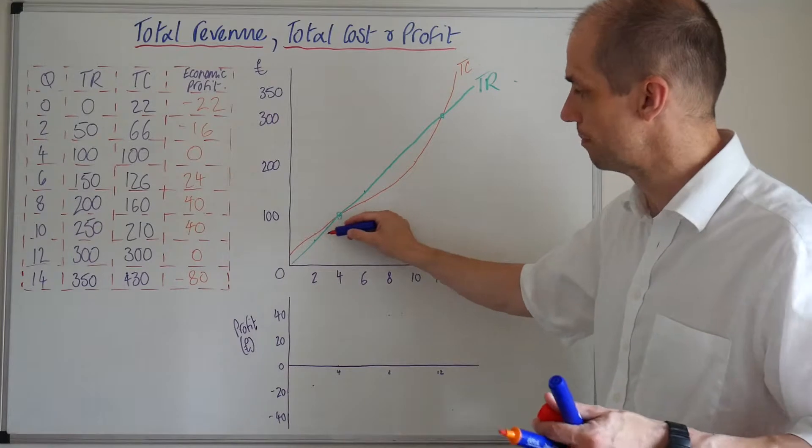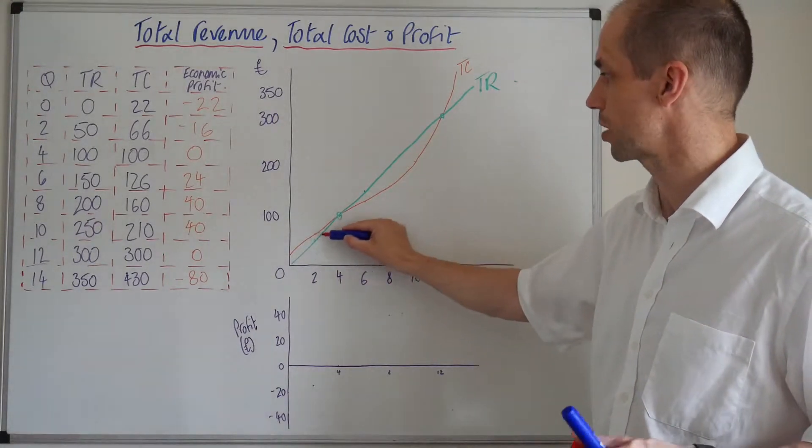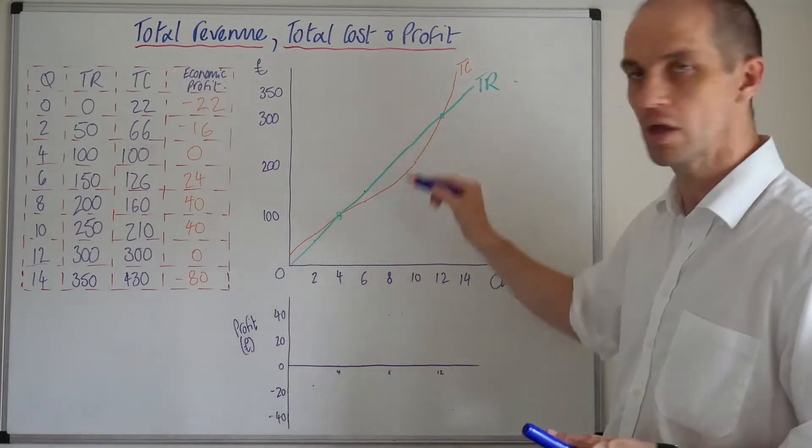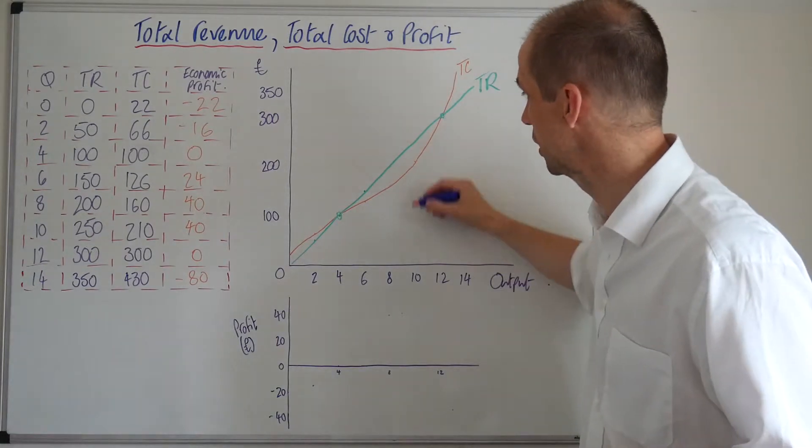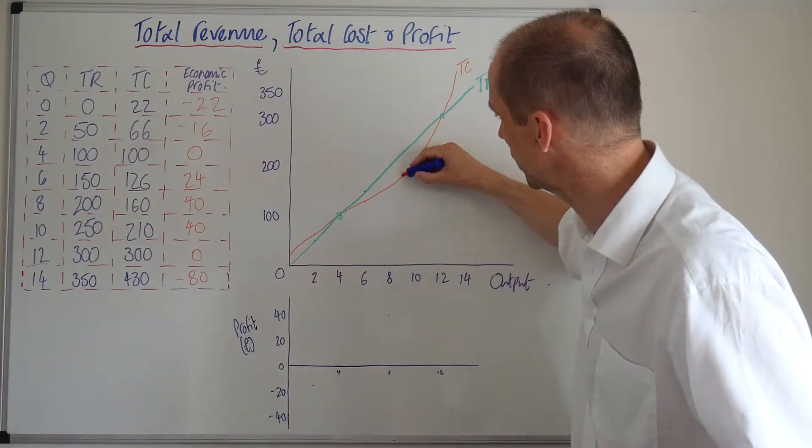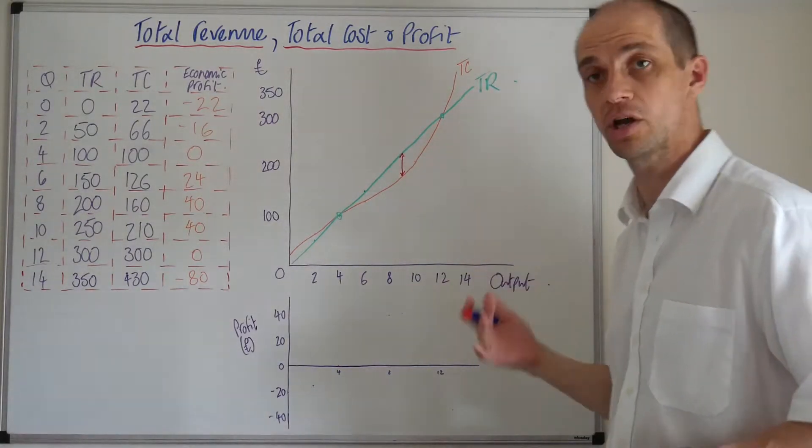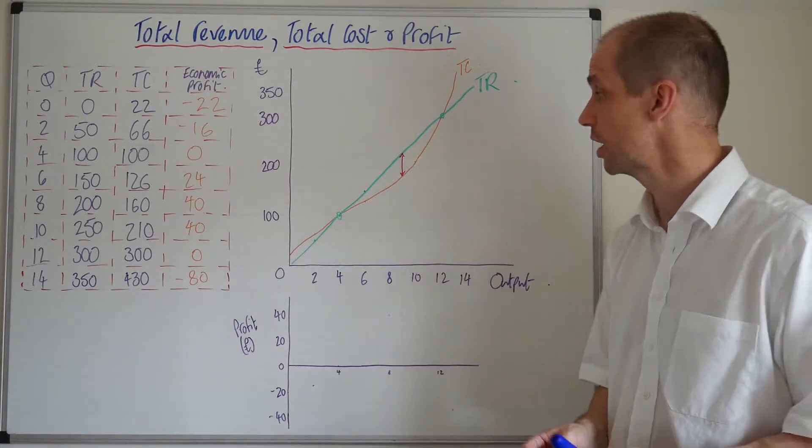But what we can also see, and let's just highlight this in another colour, is as the firm begins operating, yes, it's making a loss, total costs are greater than total revenue, but here, throughout this output level, total revenue is greater than total cost. And round about here, at about nine units of output, is where the actual gap between total revenue and total cost is at its greatest.